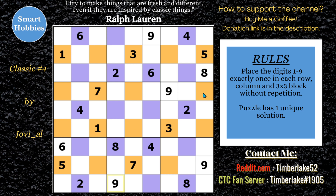When you have the same number of blanks as givens for the other color, that's when set comes in handy. Since all the purples are two, four, six, and eight, all these unknown orange cells have to be two, four, six, and eight.